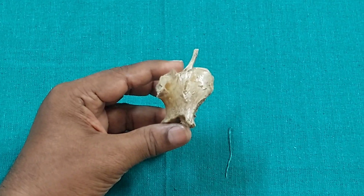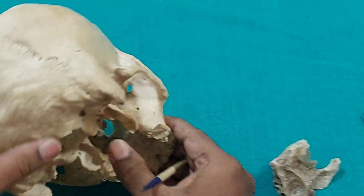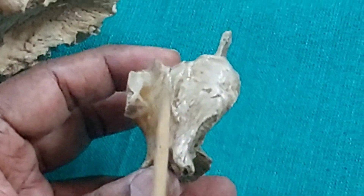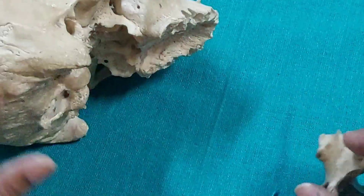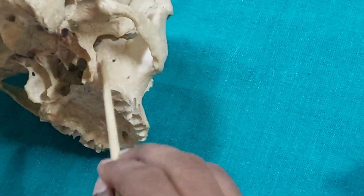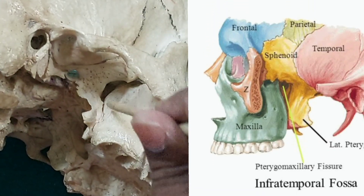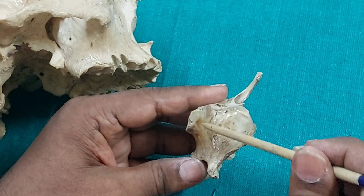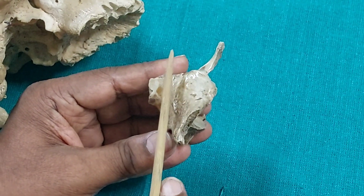The posterior surface, also called the infratemporal surface, forms part of the infratemporal fossa laterally. Through the pterygomaxillary fissure, we reach the pterygopalatine fossa. So the posterior surface forms the anterior boundary of the pterygopalatine fossa medially and the infratemporal fossa laterally, with the pterygomaxillary fissure in between.